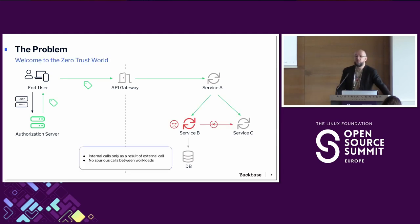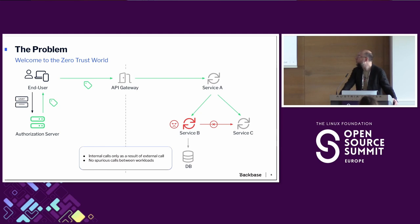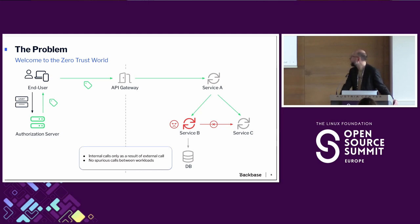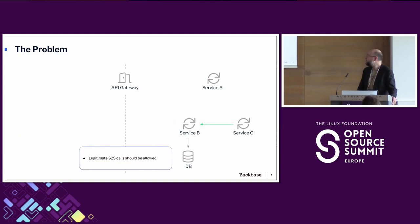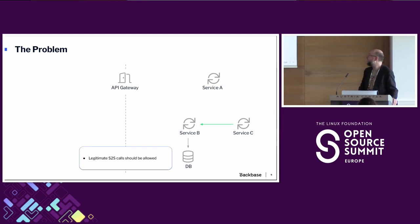In the zero-trust world, we want this chain of invocations to occur only as a result of an authenticated external call. In other words, we would like to rule out spurious, unsolicited, or unauthorized invocations between the workloads. For example, we would not want a malicious workload to connect to its neighbor without proper authorization. At the same time, we would like to keep the legitimate calls between workloads, also known as service-to-service calls.